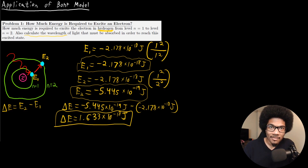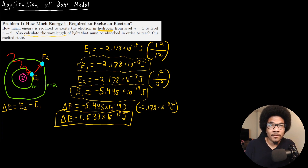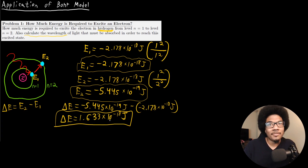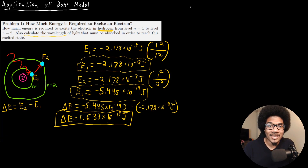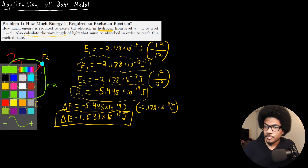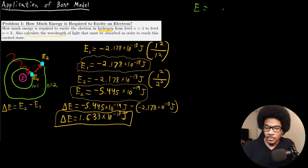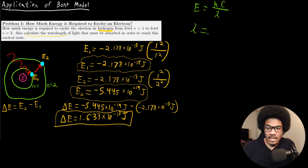We also have a second part to this question — they want us to calculate the wavelength of light necessary to make this happen. From the photoelectric effect, we know that radiation can be viewed as a stream of particles called photons. So we need to calculate the wavelength of a photon that would give us this energy of 1.633 times 10 to the negative 18 joules. We use E equals hc over lambda, and solving for lambda gives us lambda equals hc over E.